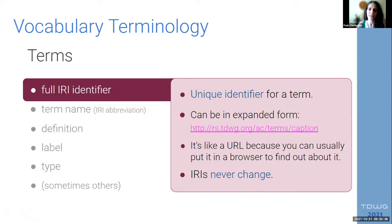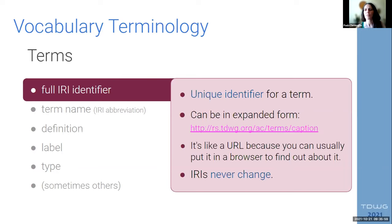First, terms have a full IRI identifier. It's a unique identifier for the term, and we can see it in an expanded form — it looks like a URL. We can usually paste it in a browser and click enter and get some information about it. Not every identifier resolves, but they usually do. One very important thing about IRIs is that they never change. Once the term is set and given an identifier, that stays with that term forever.